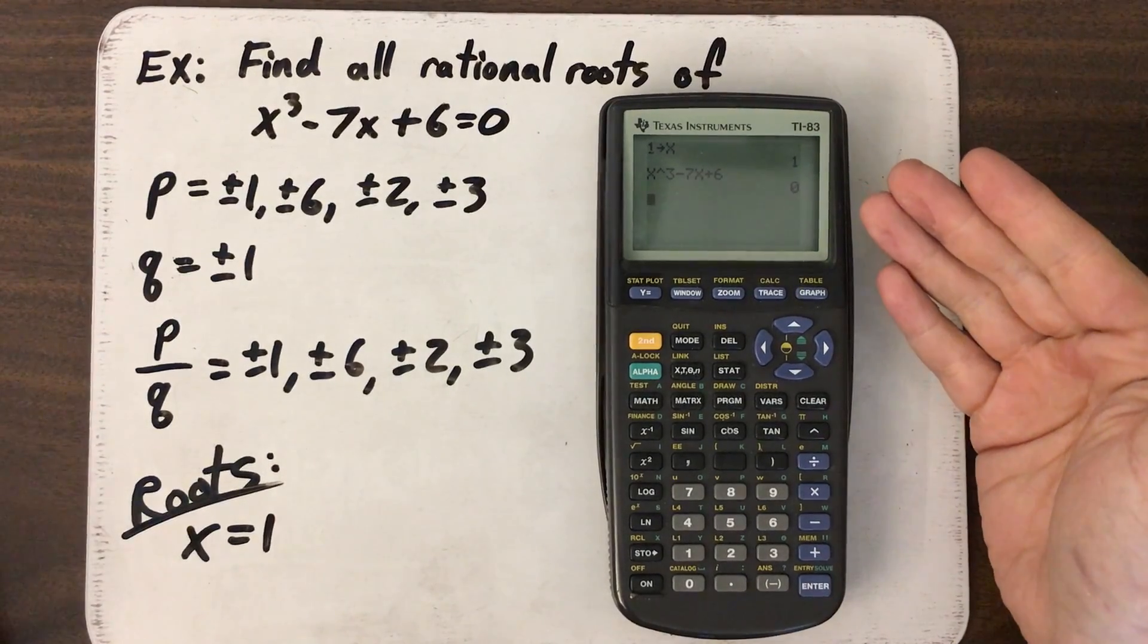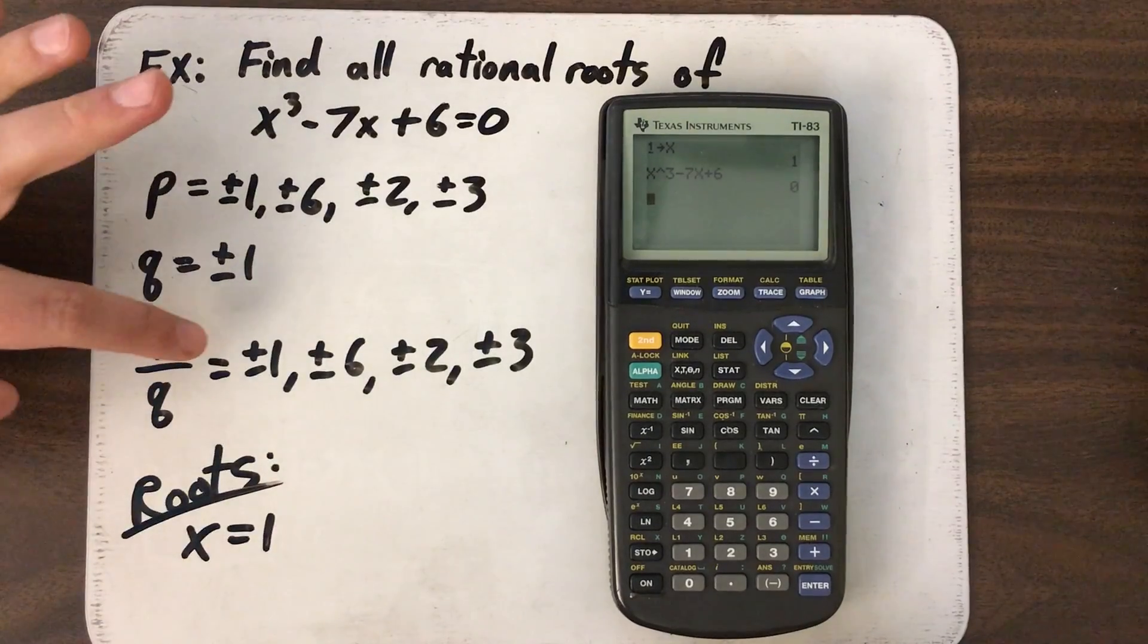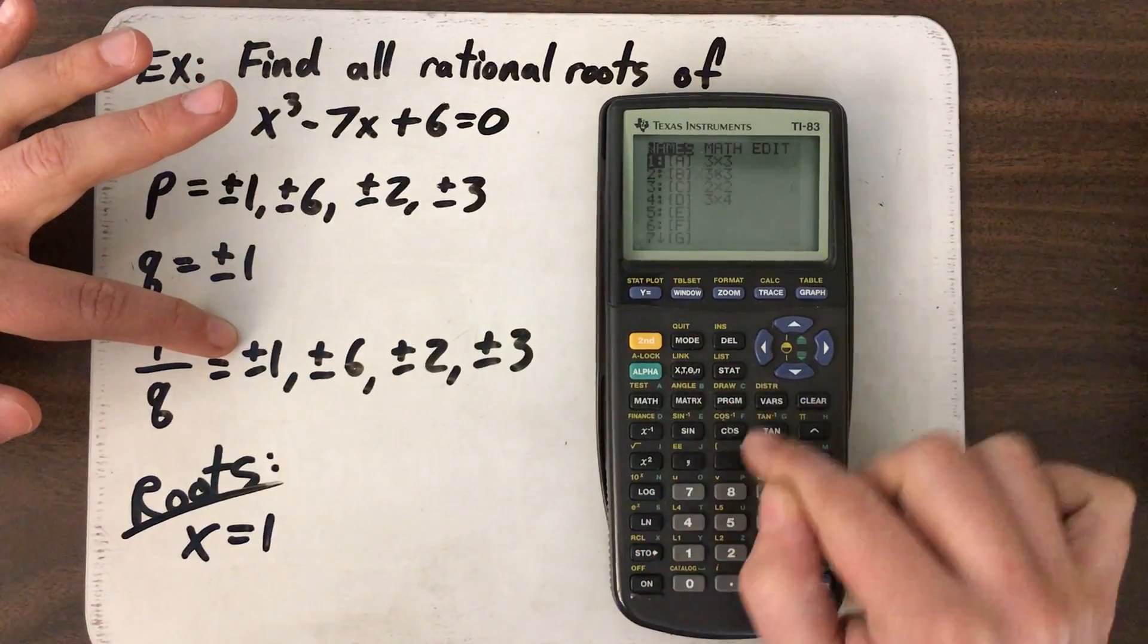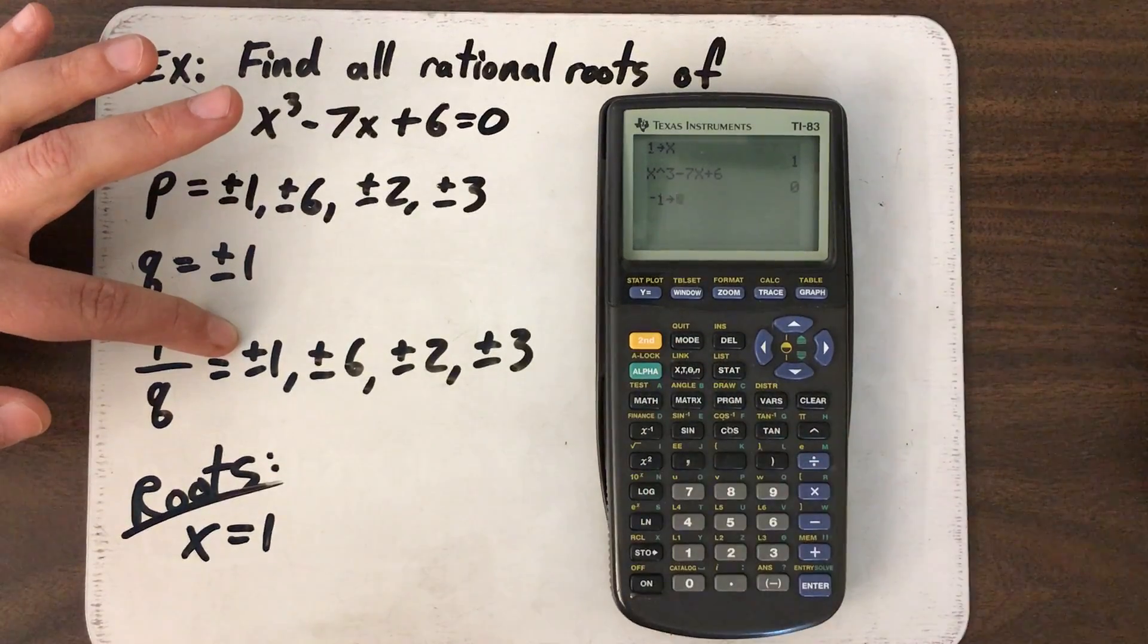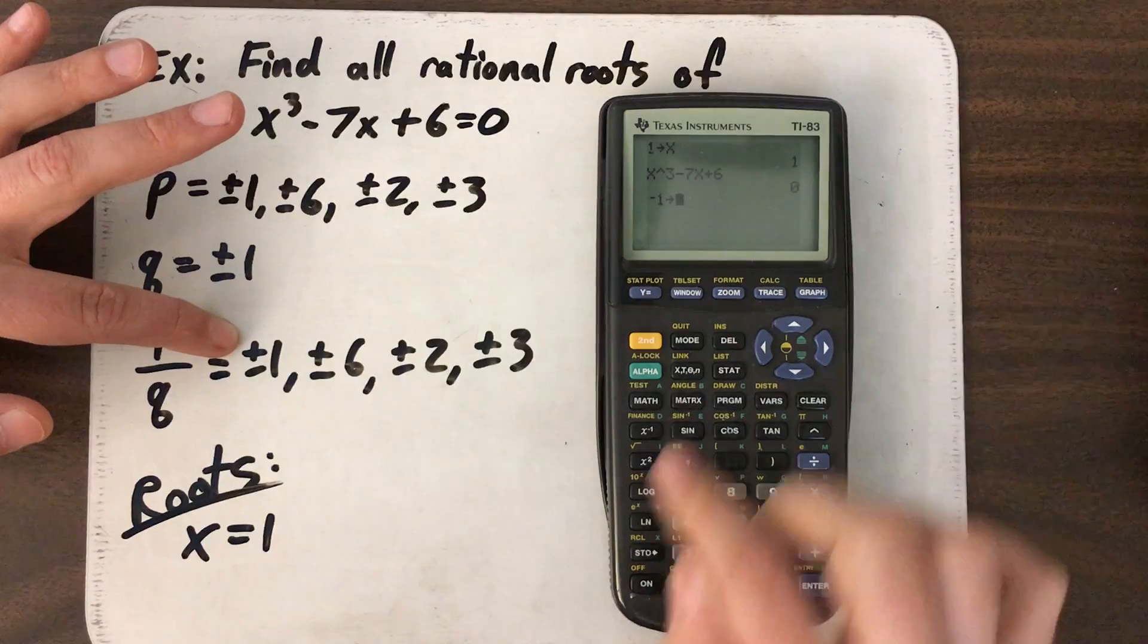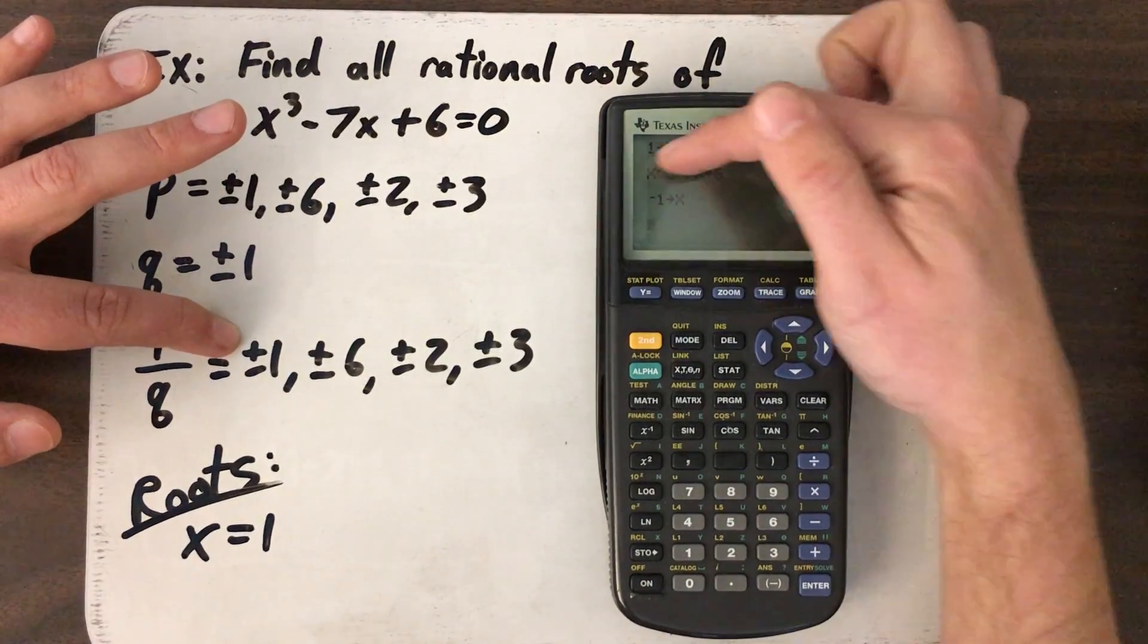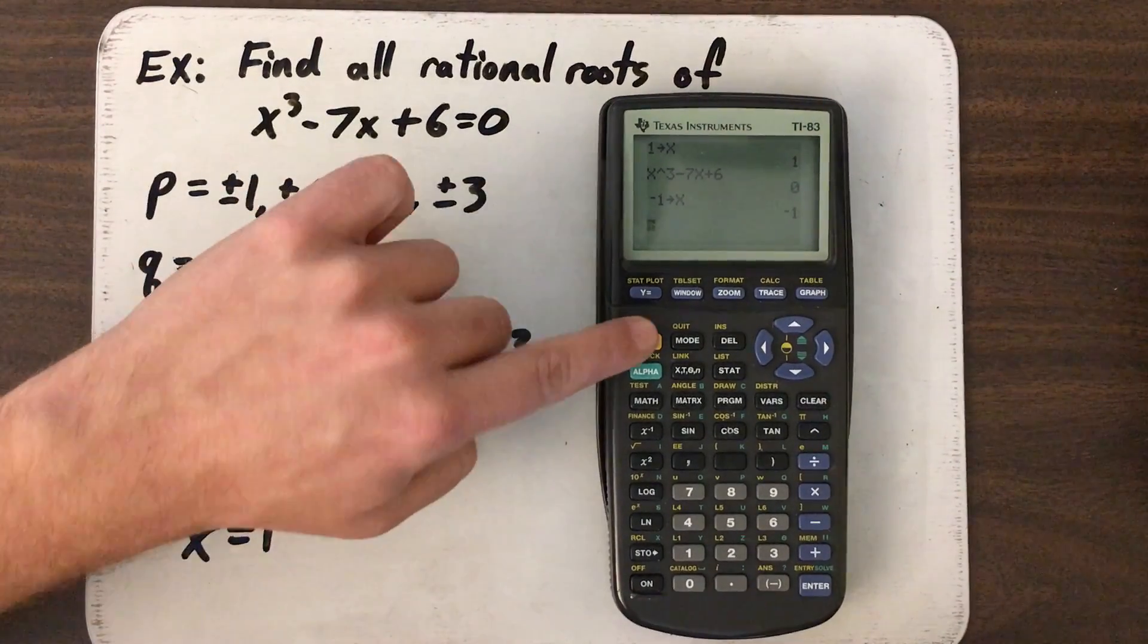Now the coolest thing about the calculator is I don't have to do this whole process over again. Instead, the next root I want to try is negative 1. So I go negative 1, store, X. Whoops, wrong button. Just quit out of that. If you ever get somewhere you don't want, second, quit. So negative 1, store, X. Enter again. All right, it's stored. Now here's the cool thing. I don't want to have to type this whole thing in again, so instead I press second, enter.